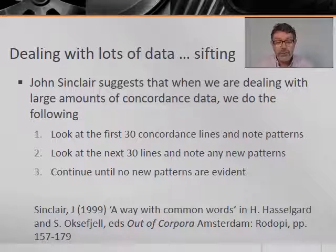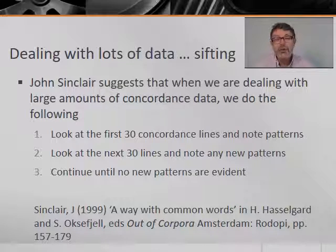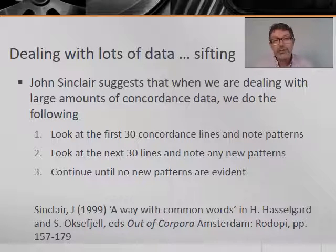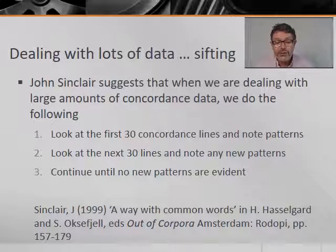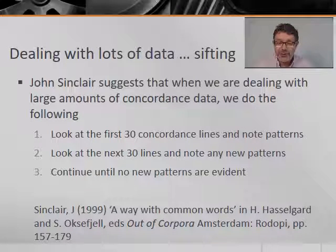First, we look at the first 30 concordance lines and we note any patterns that we might see. Then we look at the next 30 lines and note any new patterns. And then we continue 30 lines after 30 lines until no new patterns are evident. Sinclair called this sifting the data, and it still works pretty well. We can adapt this method slightly to our own purposes.